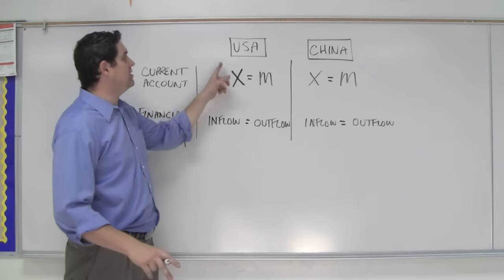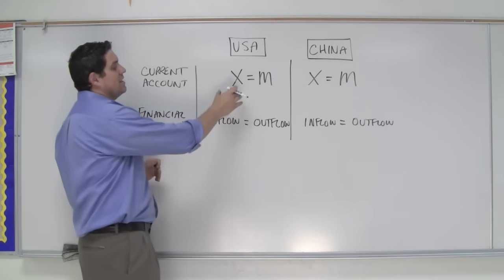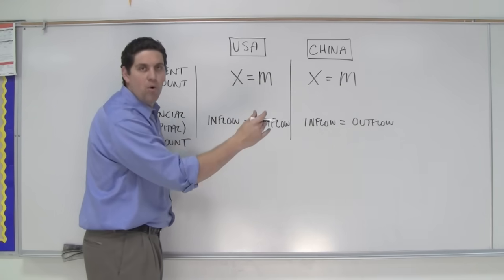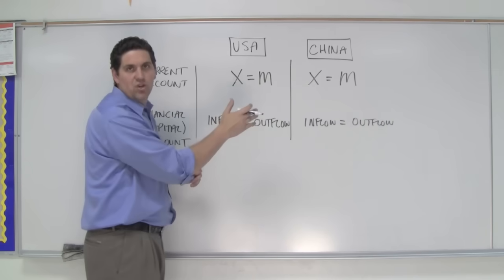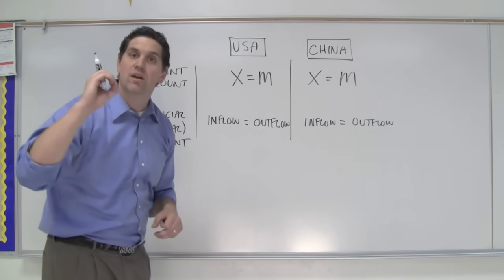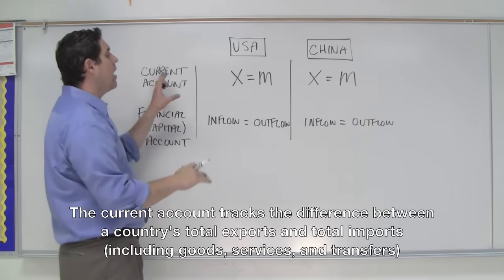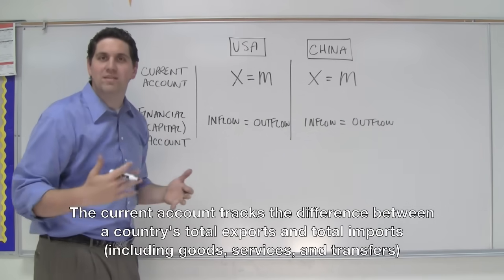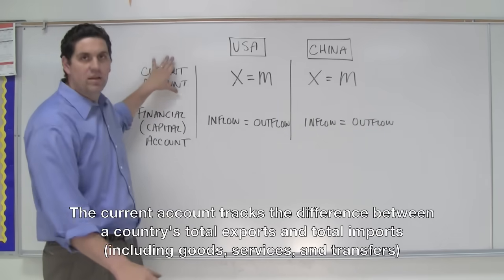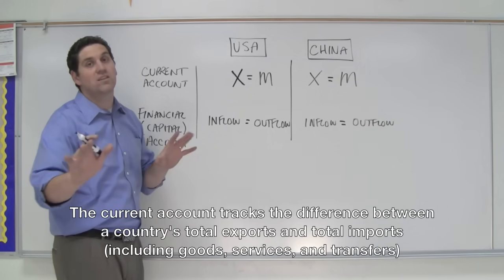I've got two countries, the United States and China, and there's no trade surplus and no trade deficit. Let's say the United States is exporting $5 billion worth of goods and services to China, but they're also importing $5 billion worth of goods and services from China. So the exports equal the imports, the net exports equals zero, and that introduces the idea of the current account. The current account has to do with goods and services between countries — it's the one you normally see in the newspaper when we talk about trade deficit or trade surplus. The current account also includes things called net investment income and net transfers.